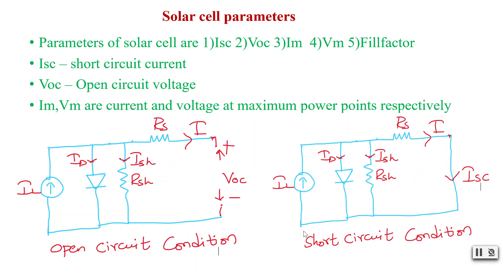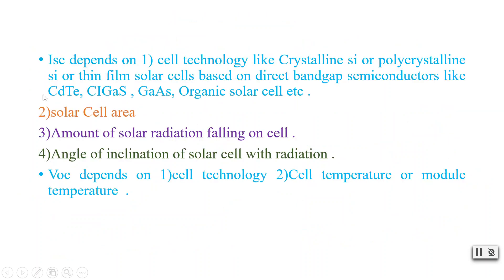The short circuit current Isc depends on cell technology — whether crystalline silicon, polycrystalline silicon, or thin film solar cells based on direct band gap semiconductors like cadmium telluride, copper indium gallium selenide/sulfide, gallium arsenide — and also organic solar cells. Isc also depends on the solar cell area: as area increases, the amount of solar radiation the cell receives increases, so the short circuit current will also increase.